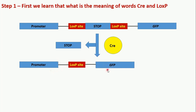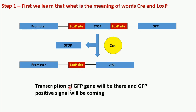This recombined sequence will have the promoter and GFP without any stop sequence. So now transcription of the GFP gene will occur and we will get a GFP-positive signal. In summary: if a stop sequence is present between the promoter and your reporter gene, the gene will not be transcribed. But if you treat the sequence with Cre enzyme, Cre will remove the stop sequence by recognizing the loxP sites, and then your gene will start expressing. In Step 1 we have learned the meaning of Cre and loxP and the functions they perform.